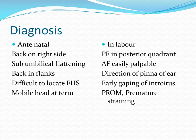On abdominal examination or inspection, there can be sub-umbilical flattening due to lack of the curved back anteriorly. The back will be felt in the flank and may be difficult to palpate. The fetal heart sound may also be difficult to locate. The limbs will be felt anteriorly and fetal movements can be easily seen. The most common cause for a mobile head, especially in a primigravida, is occipital posterior position.